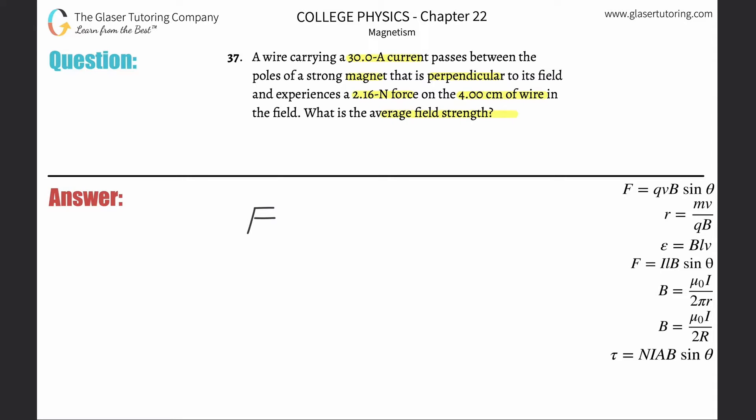The force on a current carrying wire is going to be equal to the magnitude of the current multiplied by the length of the wire, multiplied by the magnetic field strength, multiplied by the sine of the angle between the magnetic field and the current.